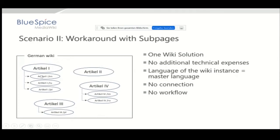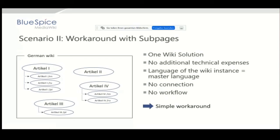It's a simple workaround: you put the translated article into a sub-page, as you can see in this sketch. There is no connection between the source text and the target text, there is no workflow. As you can see from the titles, it's not a neat solution — it stays a German wiki, the software is in German, you have one category system, and the article names remain in the source language. Maybe you can work with display title, but it's not neat.